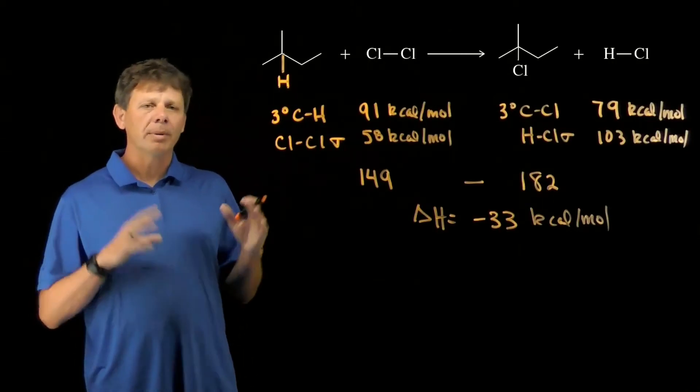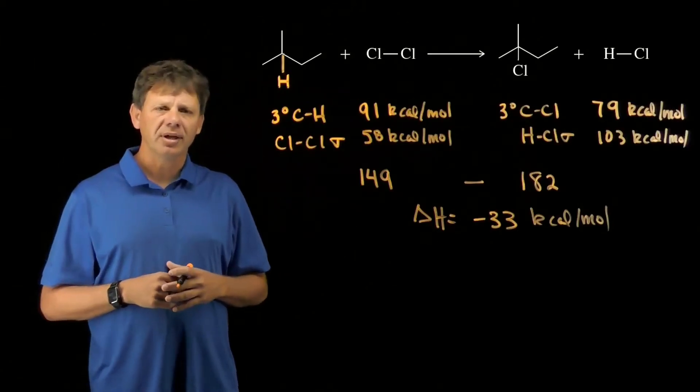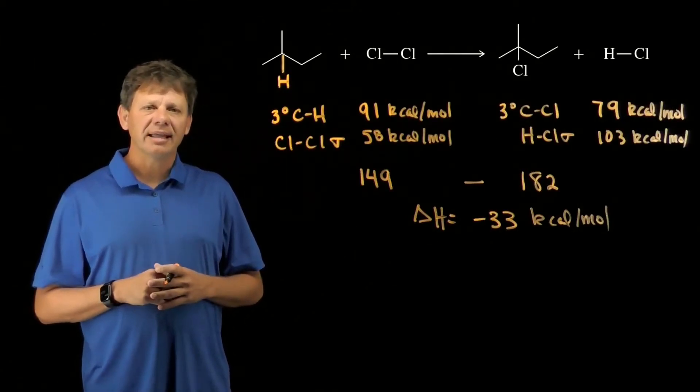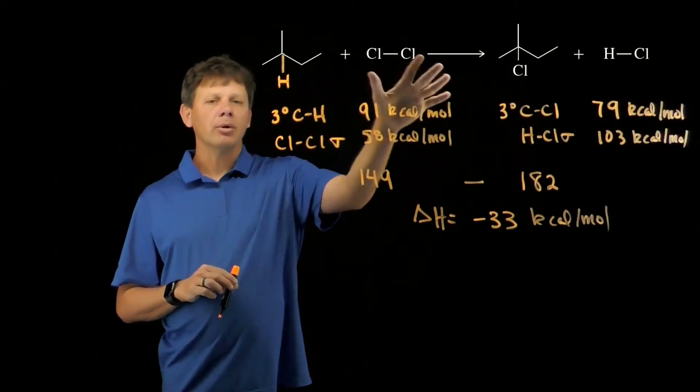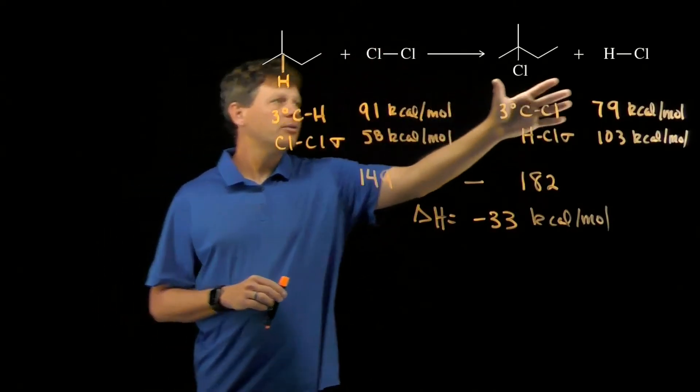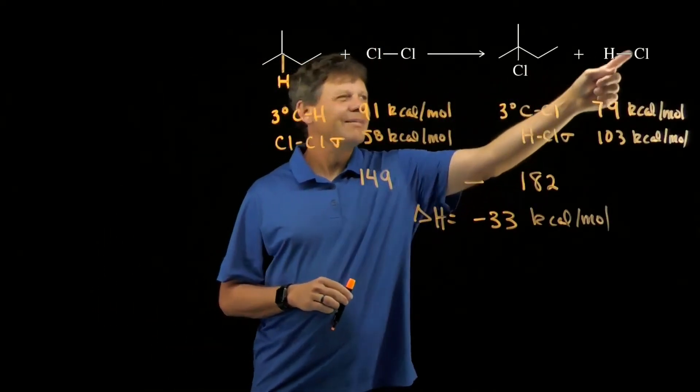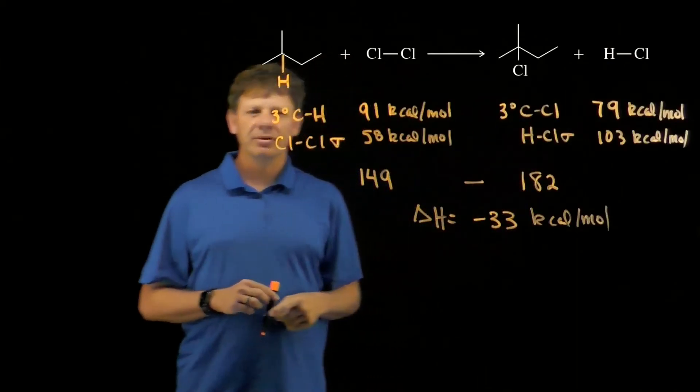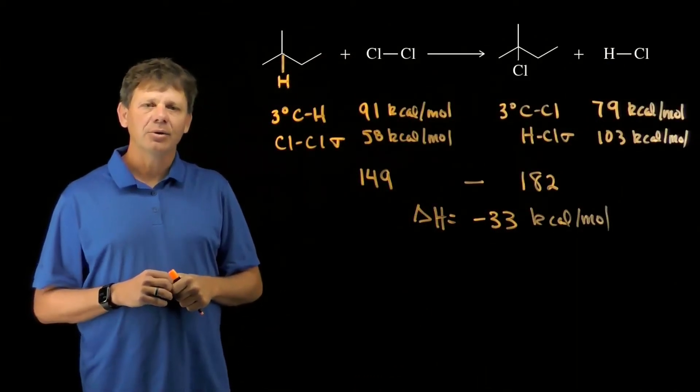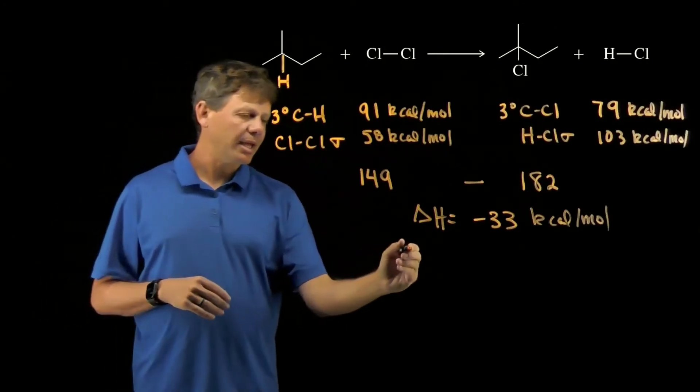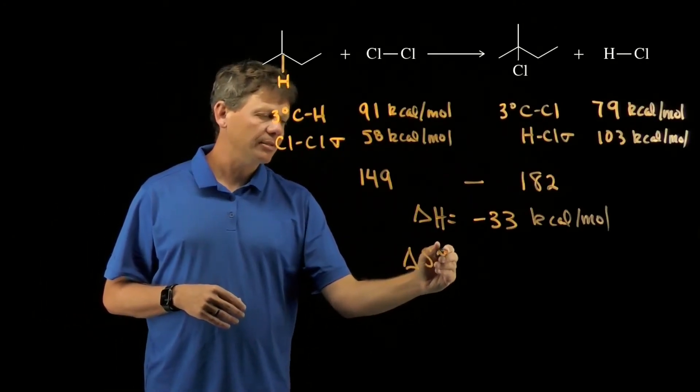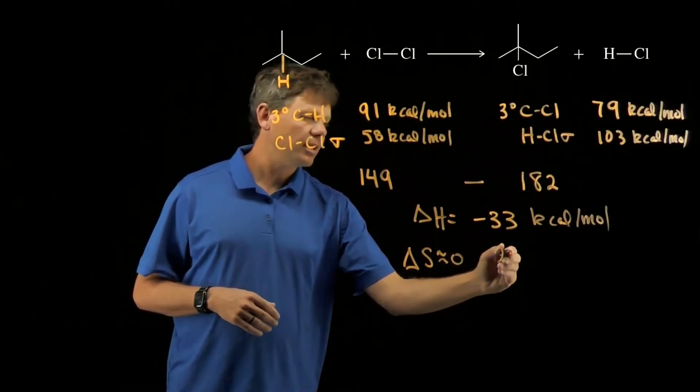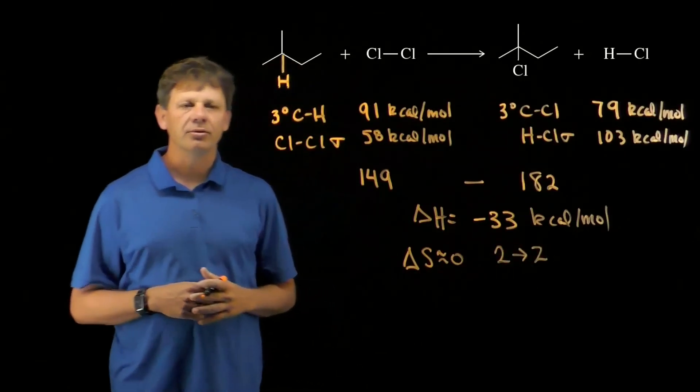To estimate delta S, we're basically just going to look at the number of molecules on each side, and we understand that gives us an approximation. We're going from two molecules on the left side to two molecules on the right, and even though HCl might be able to dissociate and that result in a slightly positive value of delta S, we're going to say that delta S here is approximately zero because it's two molecules going to two molecules.